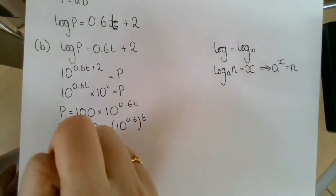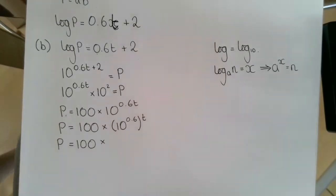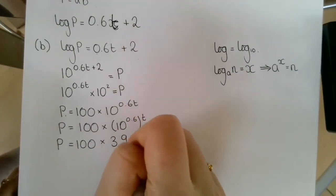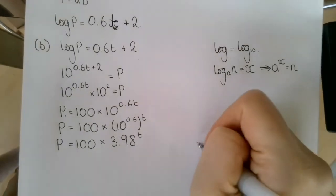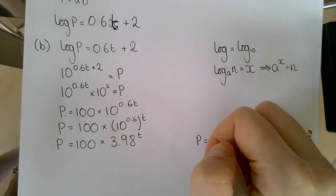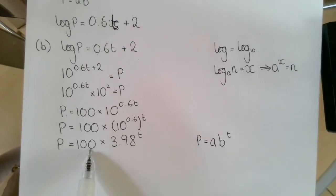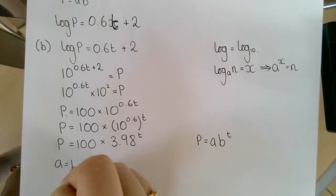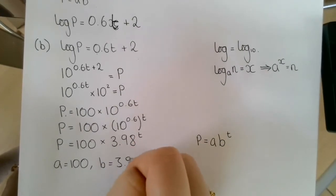And then if I use my calculator to work out what 10 to the power of 0.6 is, that is 3.98. So we've got 3.98 to the power of t. Now, we were told that our equation is modeled as p equals ab to the power of t. So clearly, a is equal to 100 and b is equal to 3.98.